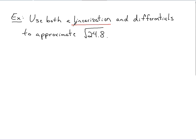This is a review from last time. When we did linearizations last time, we were given a function. We were given some x value to play with. Here, we're just given this square root of 24.8 that we know we have to approximate. So we have to create our own function.